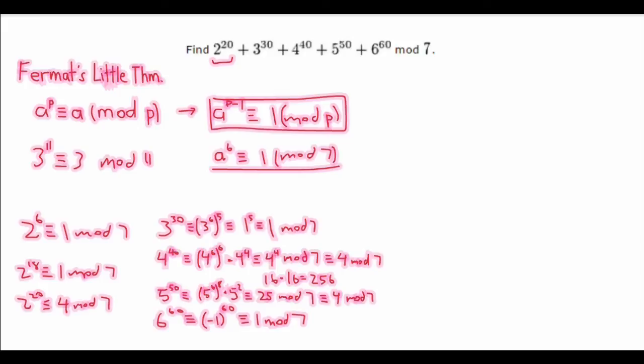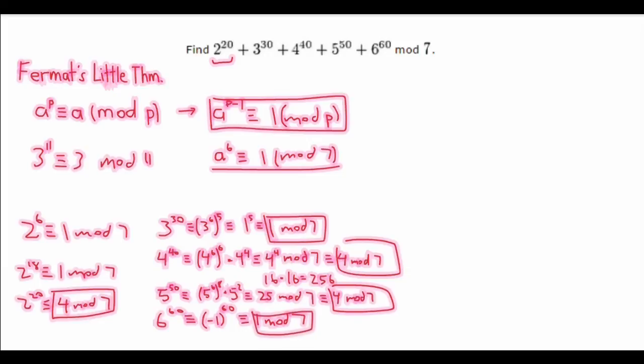Now, we have all these things. 2 to the power of 20 is 4 mod 7. 3 to the power of 30 is 1 mod 7. 4 to the power of 40 is 4 mod 7. 5 to the power of 50 is 4 mod 7. And 6 to the power of 60 is 1 mod 7. We can simply just add them all together to find the total mod 7. So, we have 4 plus 1 plus 4 plus 4 plus 1 equals 14, which is congruent to 0 mod 7. And we are done.